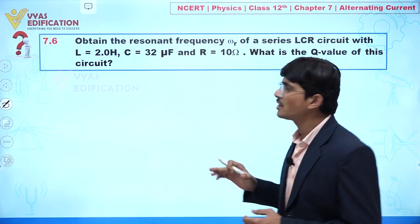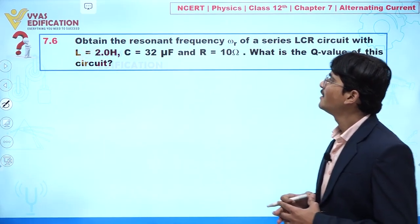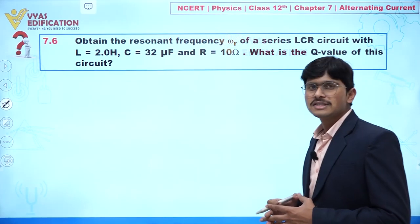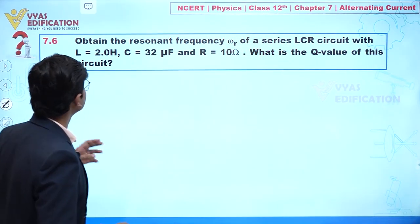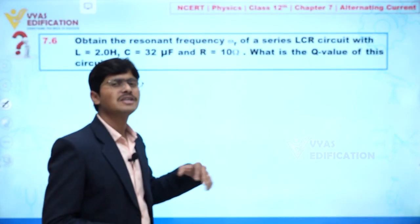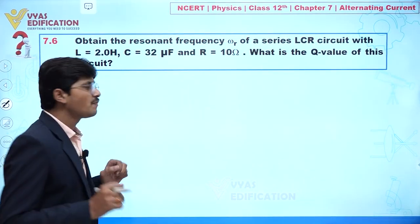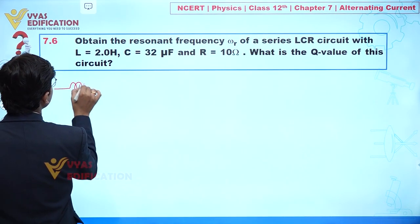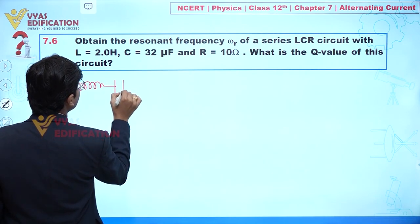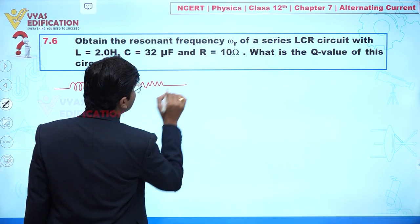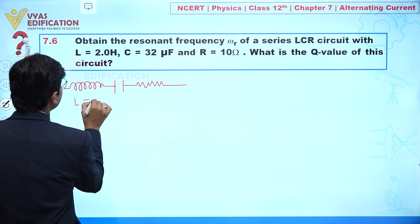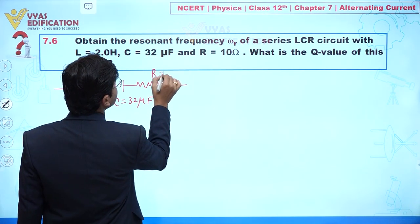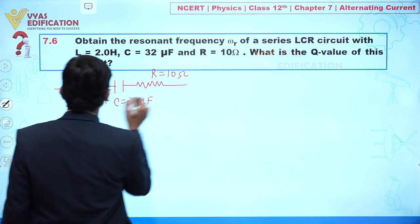We are going to discuss question number 7.6. In this question, we need to obtain the resonant frequency omega r of a series LCR circuit. The given values are: L = 2 Henry, C = 32 microfarad, and R = 10 ohm. We also need to find the Q value of this circuit. Let's draw the series LCR circuit with these components.